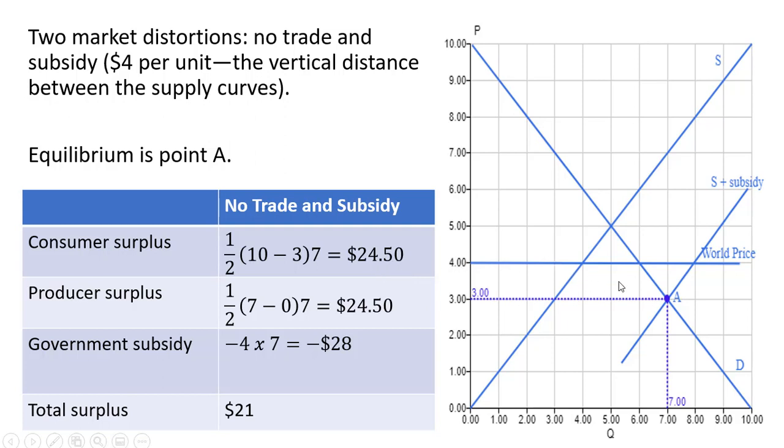Now as for producers, producers are getting $3 per unit, but then they're also receiving a $4 per unit subsidy from the government. So producers are receiving $7 per unit, the $3 from the consumers and the $4 subsidy from the government. So we're going to look at the producer surplus is going to be this area, the difference between $7 and the supply curve.